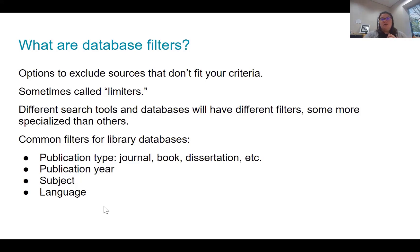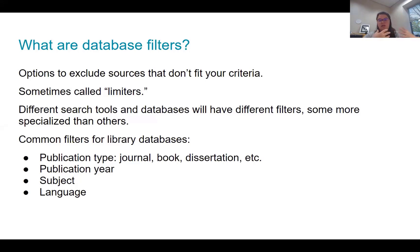There are some common filters you'll find in library databases. Publication type — whether it's a journal article, a book, a dissertation, archival research, or a newspaper. Publication year is also a very common one. Subject or subject headings is something you'll also see, and things like language. Those four you will definitely see a lot.